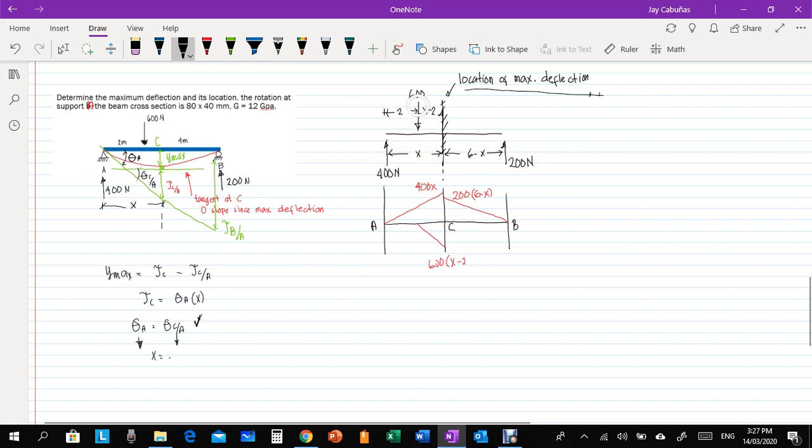Now, our 600 Newton, the location from our point C is X minus 2, right? Because it's 2 meters from there. So, X minus 2. Okay, let's draw the moment by parts. Again, to draw moment by parts, we look at each load. So, 400, going down, that is 400 X, right? Now, 600, going down, that is 600 X minus 2. Then, the 200 Newton, going up the moment diagram, so that is 200 times 6 minus X. So, this is the moment by parts.